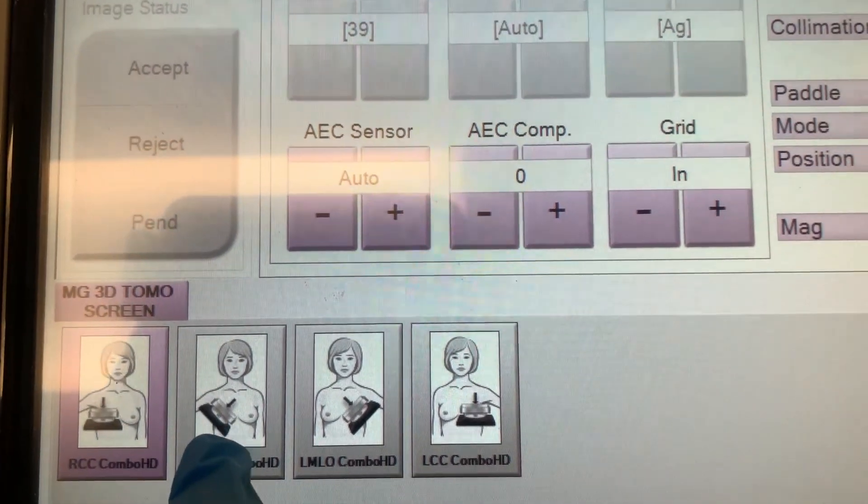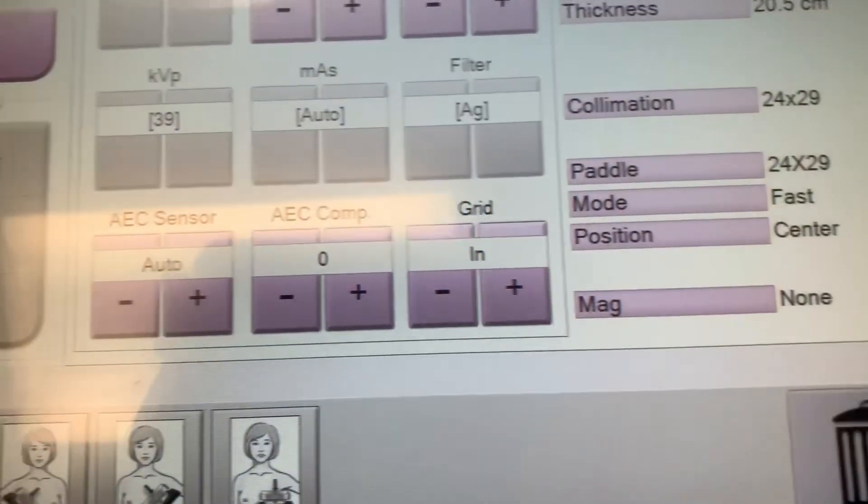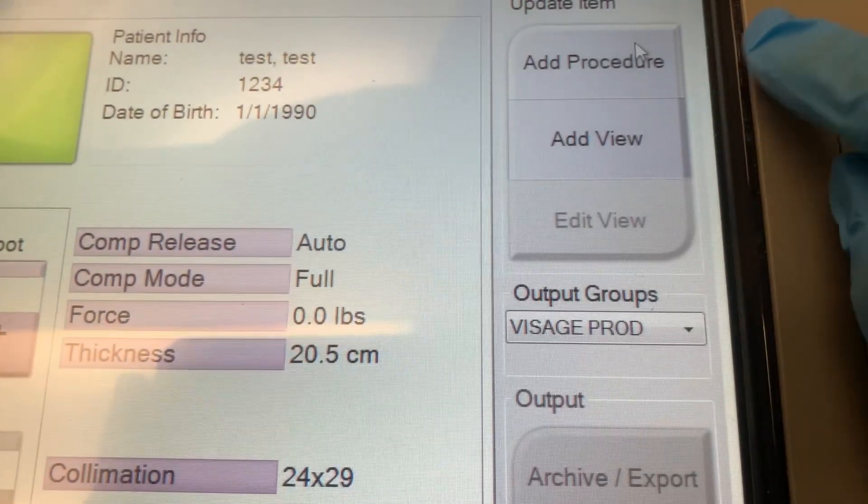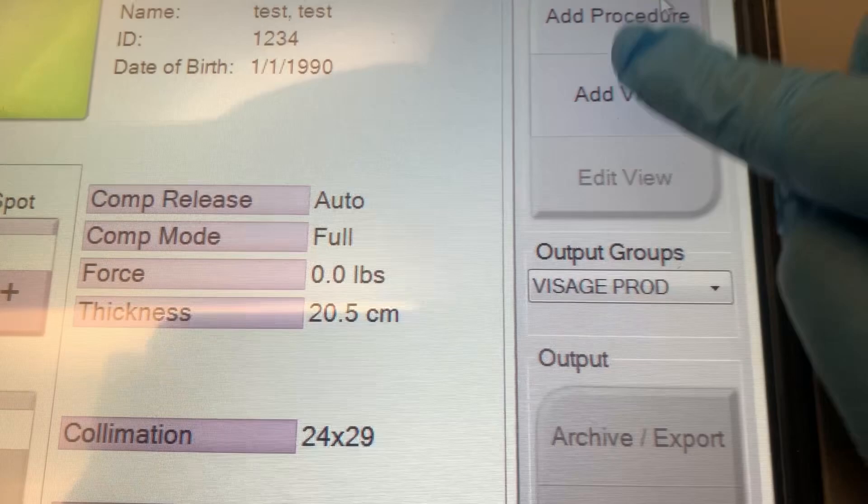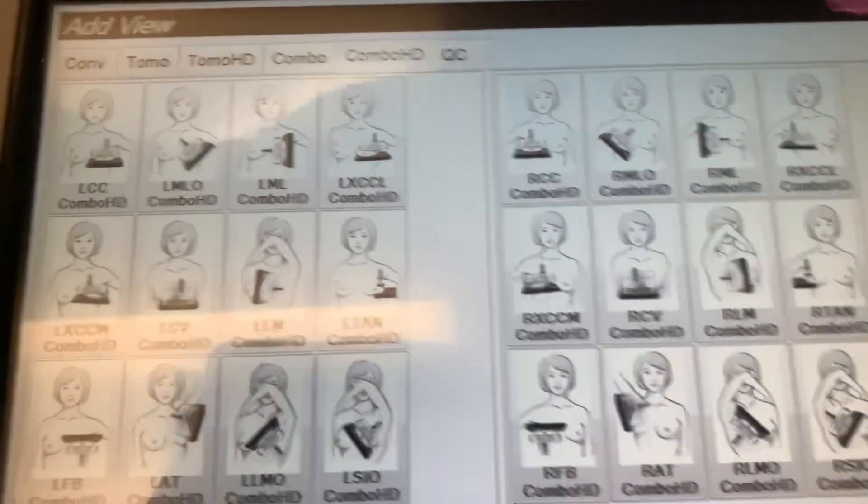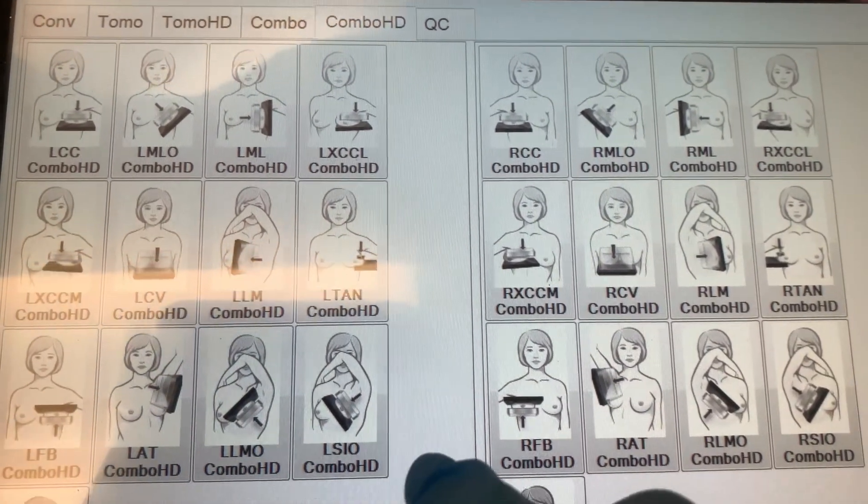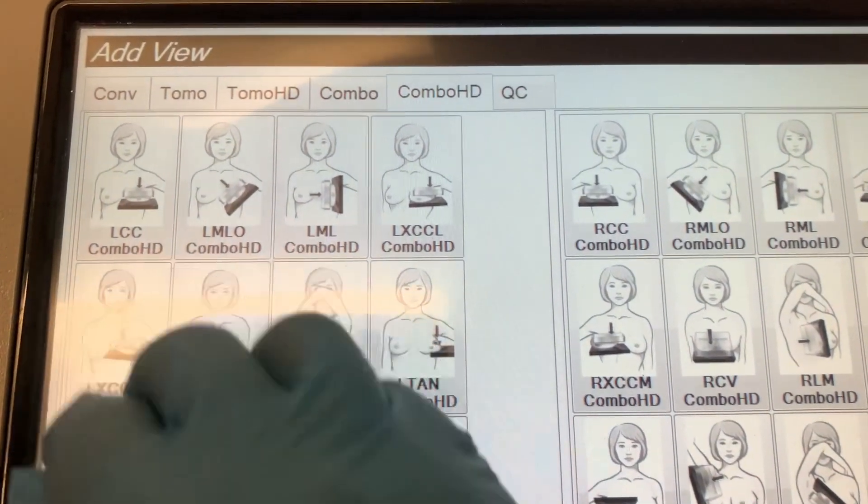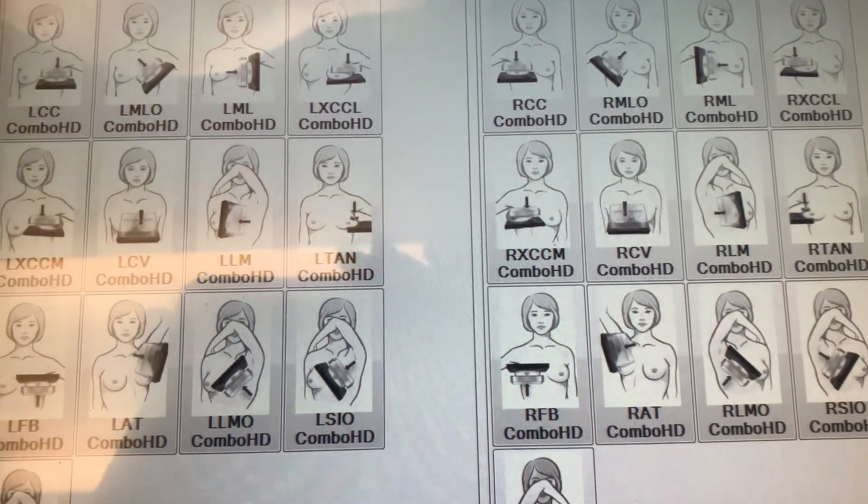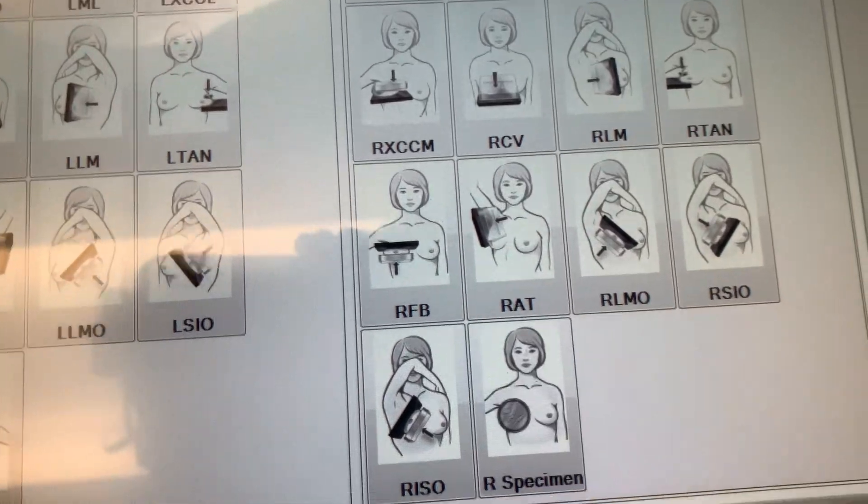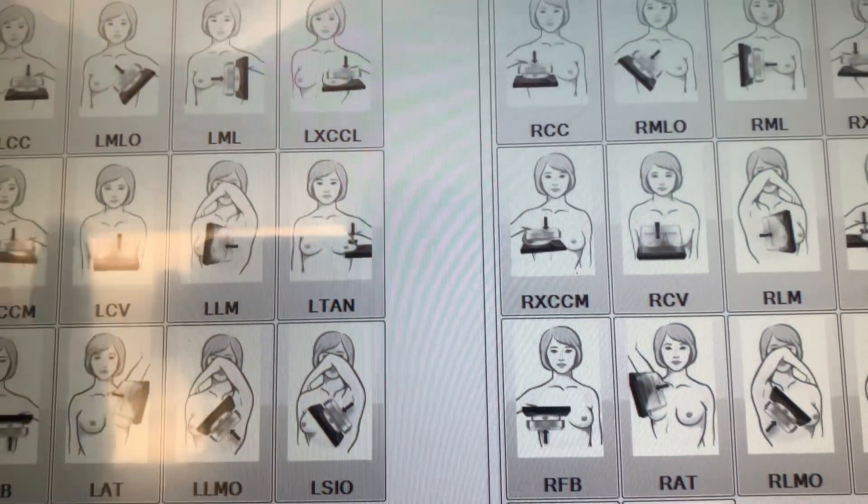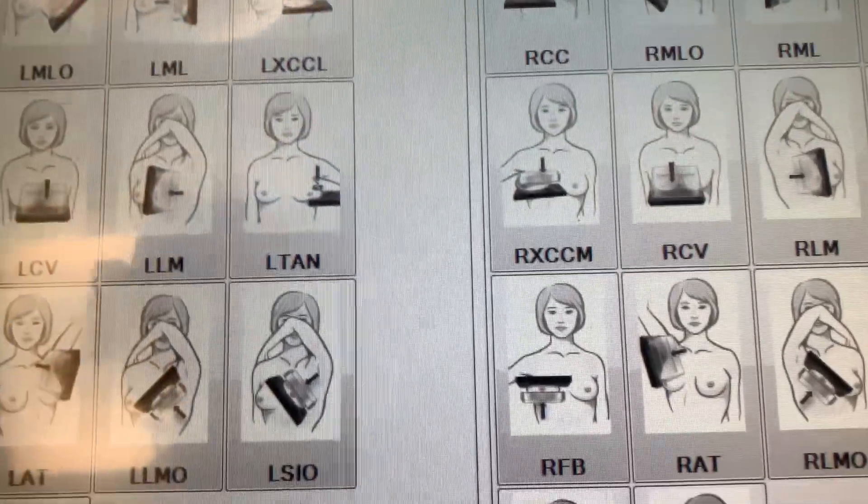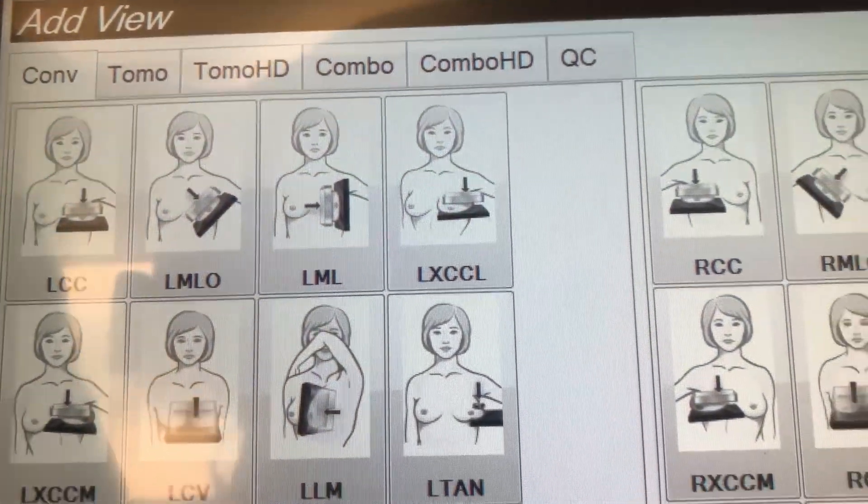Your CC, your MLO. And then if you want to add a procedure or, well, let's add a view. First, let's add a view. So these are the different views, like the compliment view. If you cannot get it all on one picture, then you can do like an XCCL. And I just hit conventional right here.